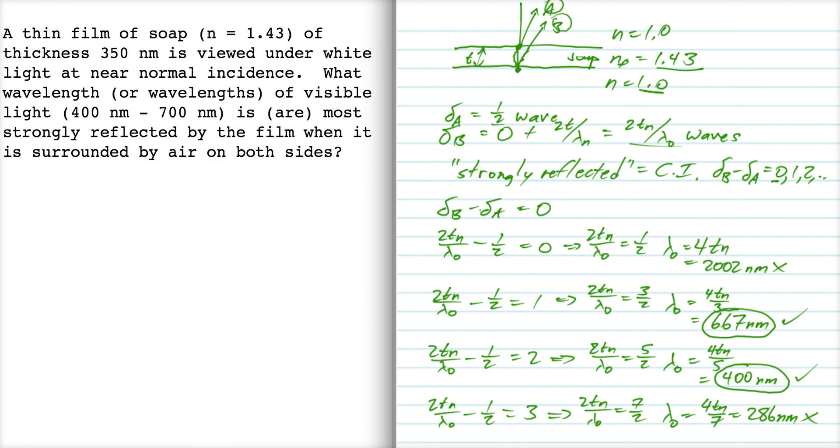So clearly, anything we do, if we set it equal to four or five or six, lambda is just going to get smaller and smaller and smaller. And so these are the only two solutions that are meaningful, the 667 and the 400 nanometers. So that's going to be our answer. That's a good one.